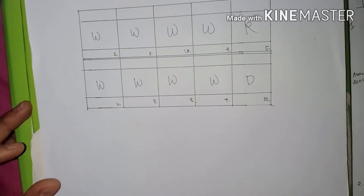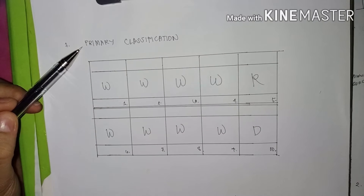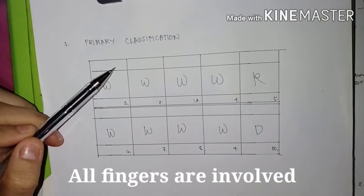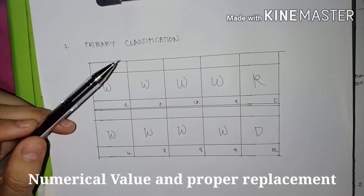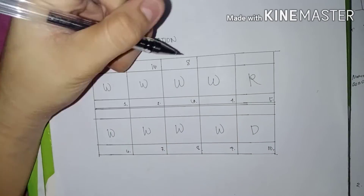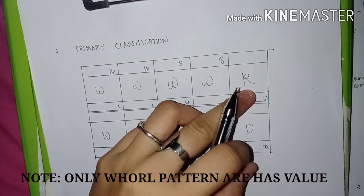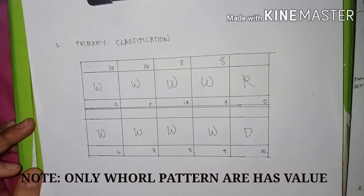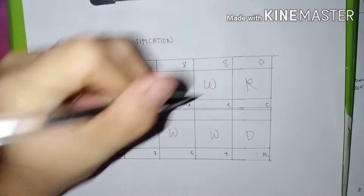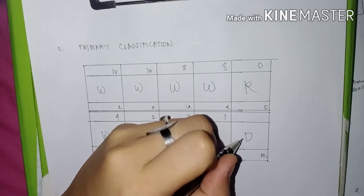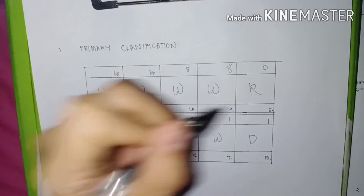After the interpretation of data and blocking out, let's proceed to the classification proper. In primary classification, all fingers are involved. The numerical values to memorize are: whorls have values of 16, 8, 4, 2, and 1 for even-positioned fingers. In primary classification, whorls have value, but loops and arches have no value. The radial loop has no value, and the double loop also takes the whorl value.